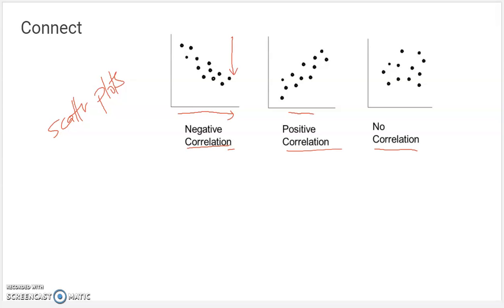Positive correlation means as this variable increases, this variable also increases. And again, they kind of move in that direction — it's not perfect. Sometimes there's no correlation, which means as one variable went up, the other didn't really follow any pattern. We wouldn't say more of this means more of this or less of this. They're just kind of randomly scattered around.